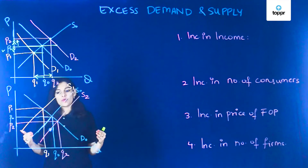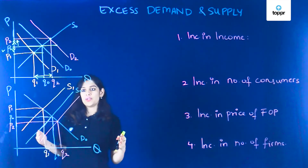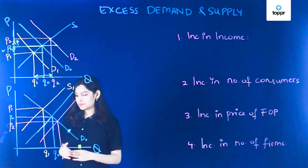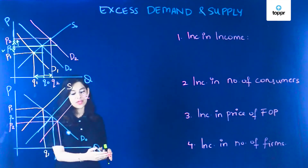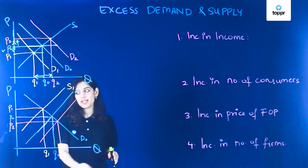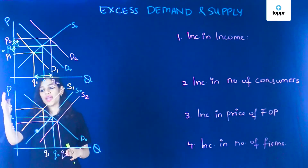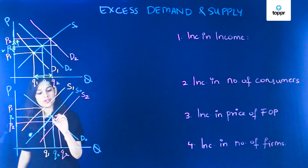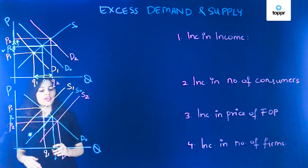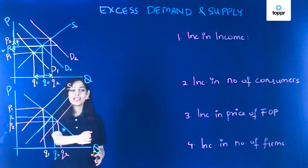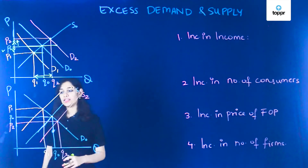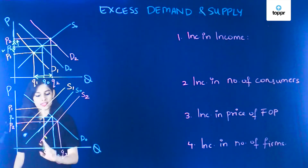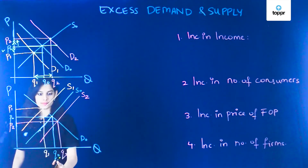Now let's talk about the second diagram where we change the supply curve. Again, on the x-axis we have quantity supplied and on the y-axis we have price. The original point of equilibrium is where D0 and S0 intersect, with price P0 and quantity Q0.